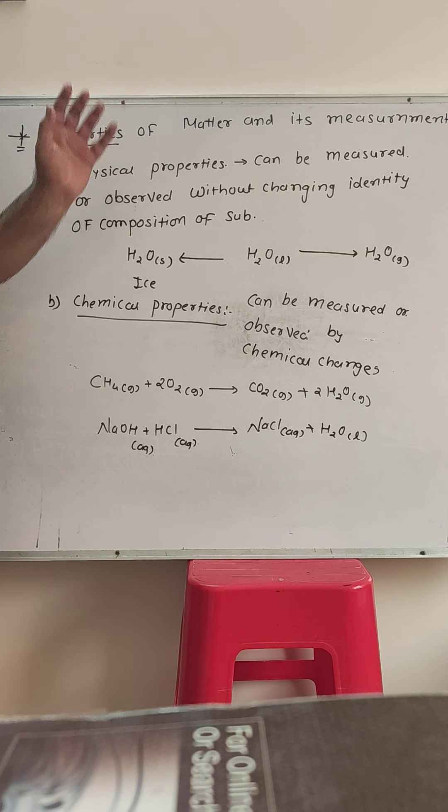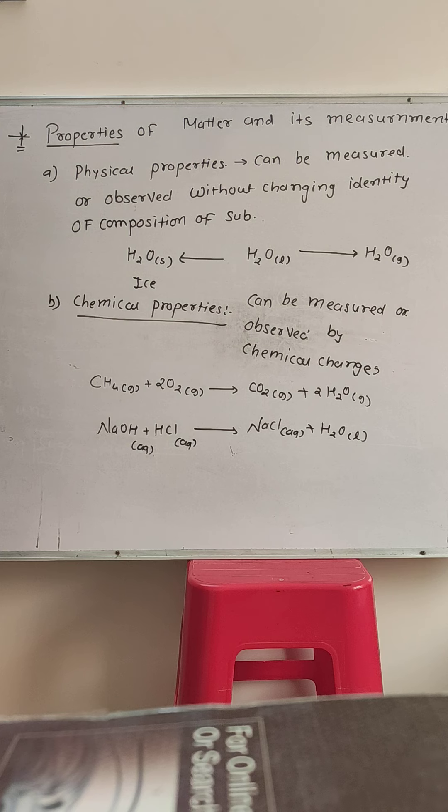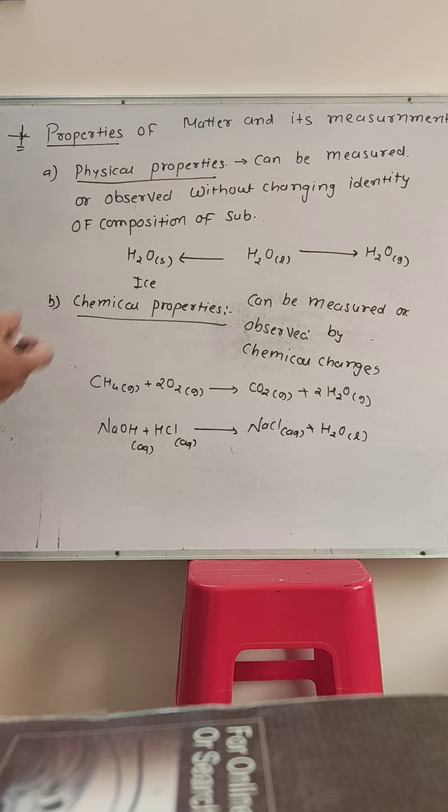Our next topic is properties of matter and its measurement. We have seen properties of matter. Any matter has two types of properties: one is its physical property and the other is its chemical property.